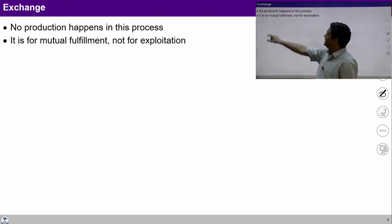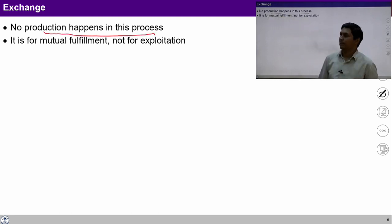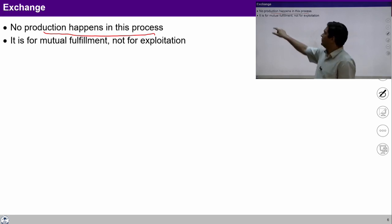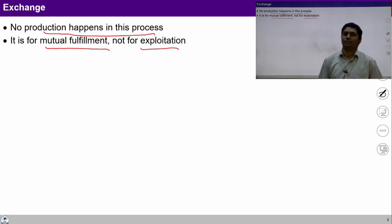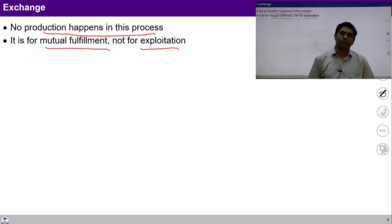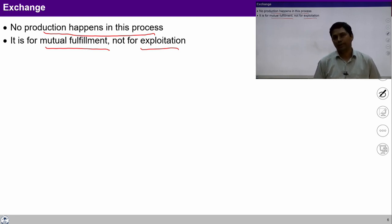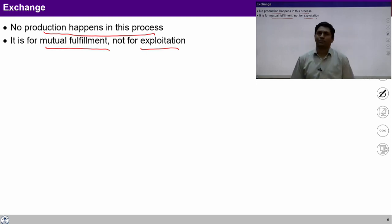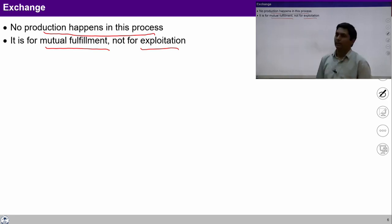In exchange, no production happens during the process. It is for mutual fulfillment, not for exploitation. It is an important point to be noted that exchange should happen with mutual fulfillment — its purpose is to ensure mutual fulfillment in people, not for exploitation. If we ensure this mutual fulfillment, then exchange becomes easy and mutually fulfilling.